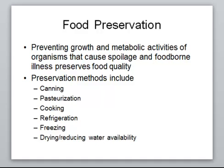Food preservation: if you know exactly how microorganisms grow in food, you could easily prevent the food from going bad. Methods include canning, pasteurization, cooking, refrigeration, freezing, and drying. By drying, you reduce the amount of water available for the growth of microorganisms. If the food has a water activity below 0.9, it cannot support the growth of microorganisms.